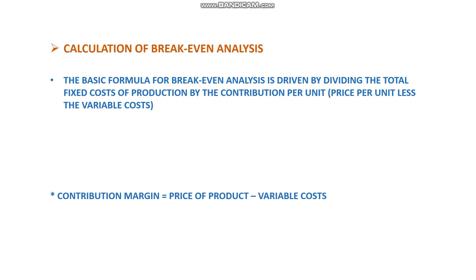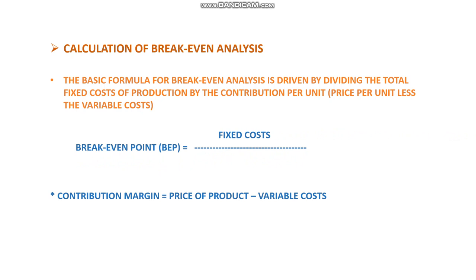How is the break-even point calculated? The basic formula for break-even analysis is derived by dividing the total fixed cost of production by the contribution per unit, which is the price per unit minus the variable cost. The formula is: Break-even point = Fixed Cost divided by Contribution Margin, where Contribution Margin = Price of product minus Variable Cost.